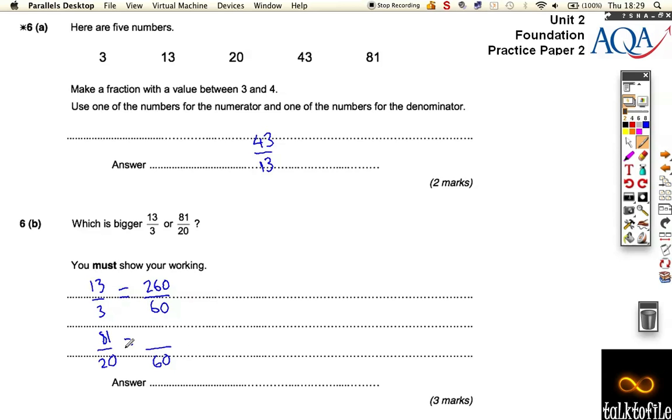This goes in 3 times, so 20 goes in 3 times, so that 81 has to be times by 3, which is 243. So which number is bigger? Well, 13 over 3 is bigger. You can see it's bigger, because now the bottoms are the same. You can see that 260 out of 60 is more than 243 out of 60. Okay, so that was method 1.